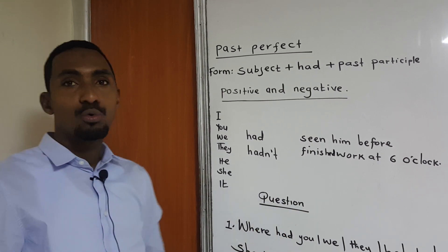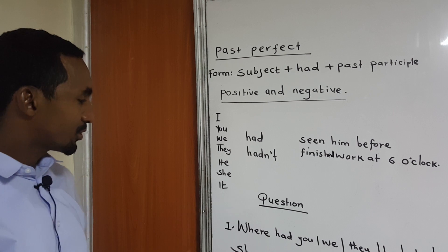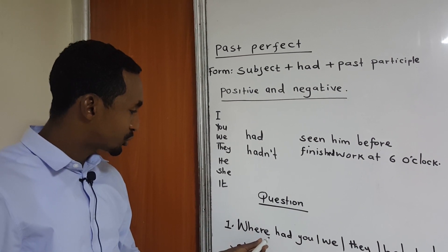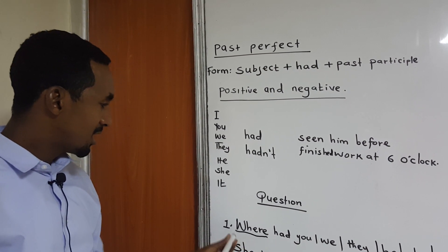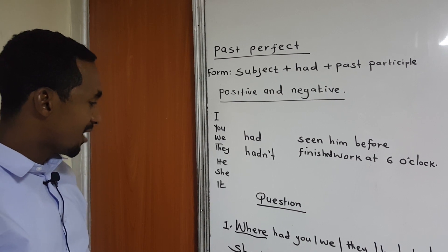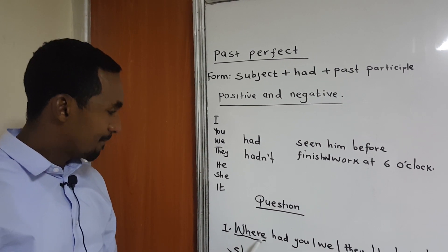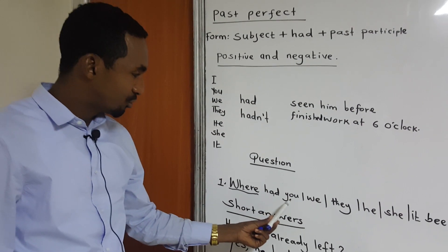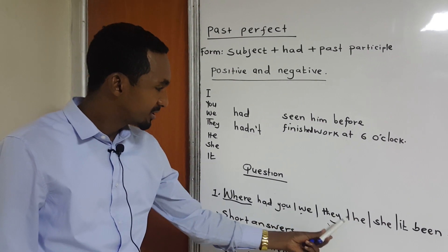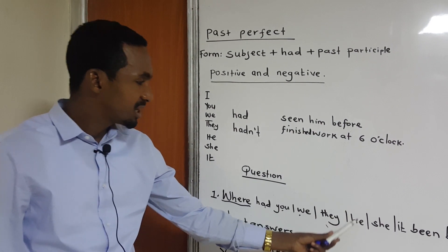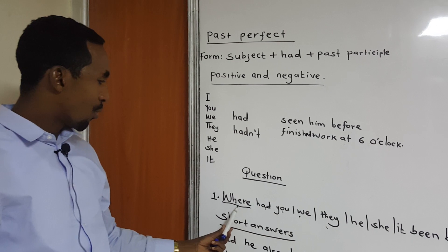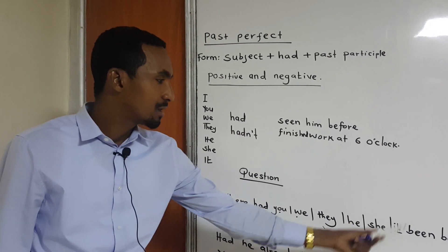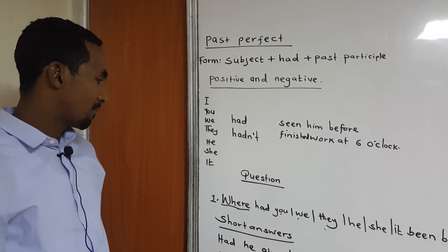Let's move to questions. We always use a question with a question word. So here we have: where plus had. Had takes you, we, they, he, she and it. So we say: where had you been before?